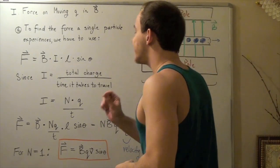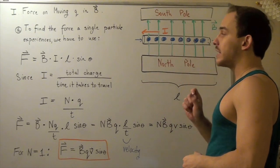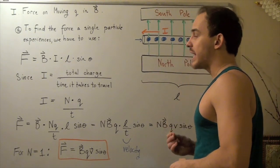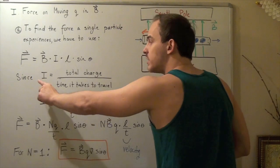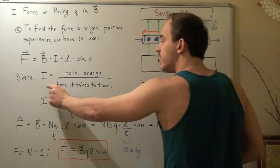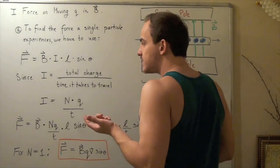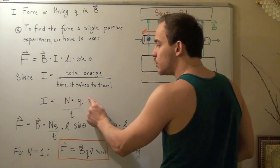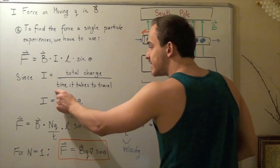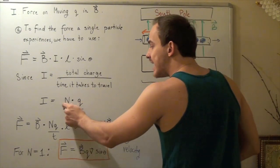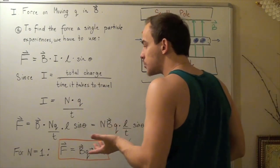Now, I want to find the force that a single electron feels. How would I find that? Well, first, let's recall that I is total charge divided by time it takes to travel some distance L. And that is simply N times Q divided by T, where T is the time it takes to travel, and N times Q is the total charge.